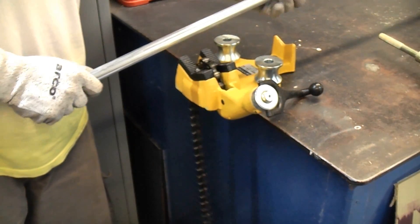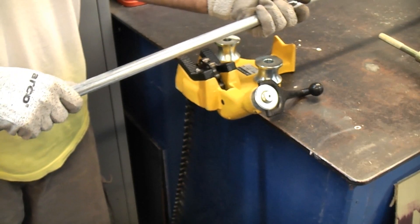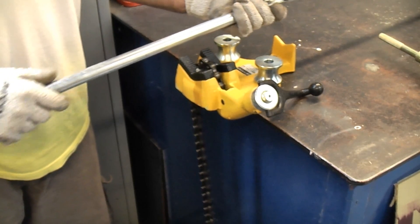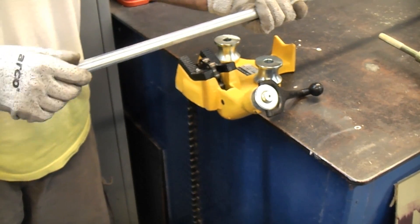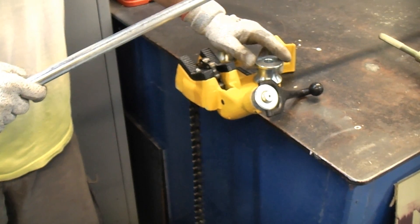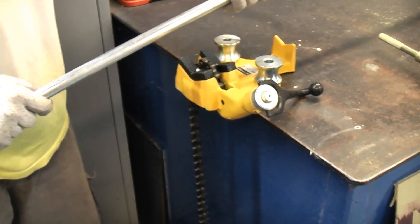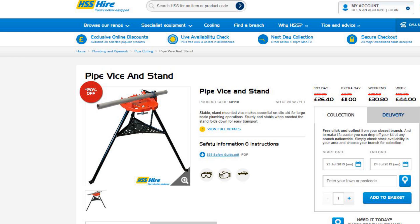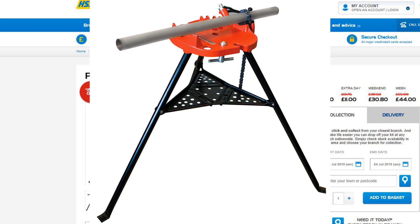The difficult part about cutting or threading conduit is actually holding it whilst you are doing the cutting or the threading. For that reason you are better off using a pipe vise or a chain vise like this. You can actually hire these from places like HSS where they come ready mounted on a tripod.